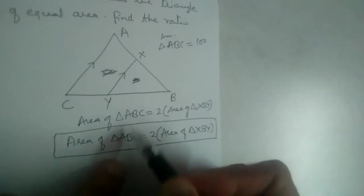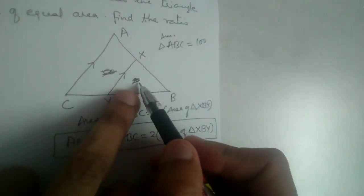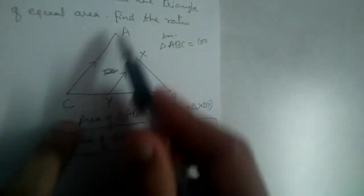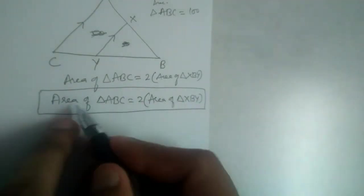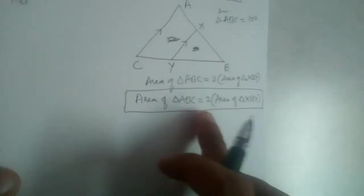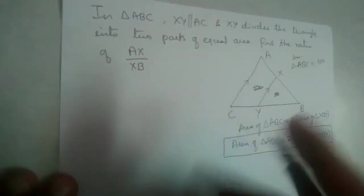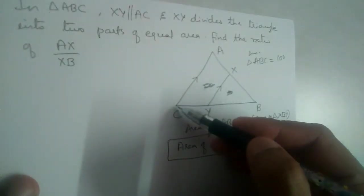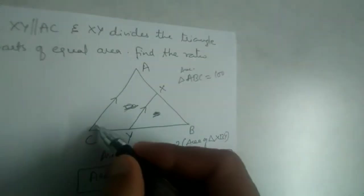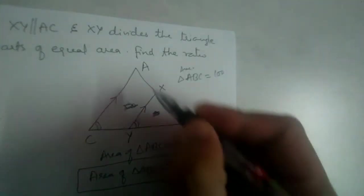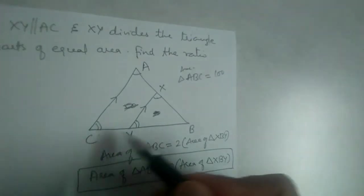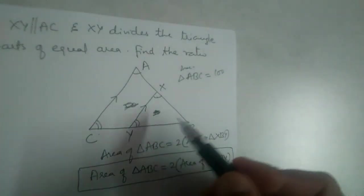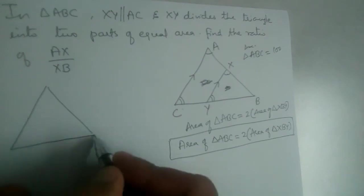For example, if the area of XBY is 50, then two times 50 equals 100, so area of triangle ABC will be 100. Now, XY is parallel to AC, which means angle C will be equal to angle Y, and angle A will be equal to angle X, since A and X are corresponding angles and C and Y are corresponding angles. And angle B is common, so we have two similar triangles here.